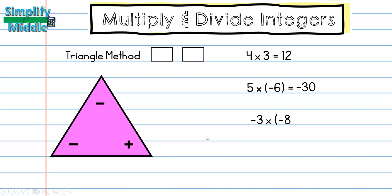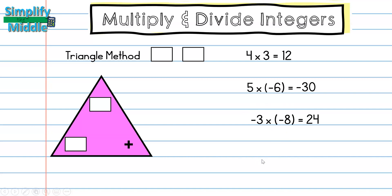Now for negative 3 times negative 8: cover both negatives, and that leaves the positive — so the answer is positive 24. These are the same sign, which makes sense. Be careful not to confuse these rules with addition or subtraction rules, which are completely separate. Only for multiplication and division do two negatives give a positive.